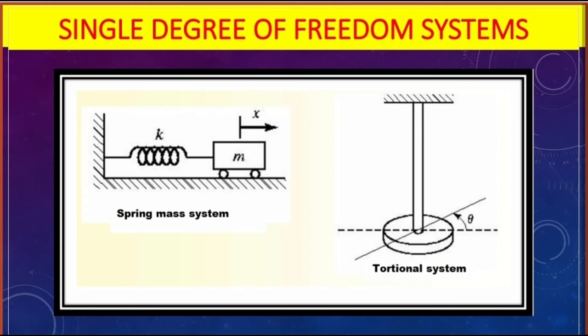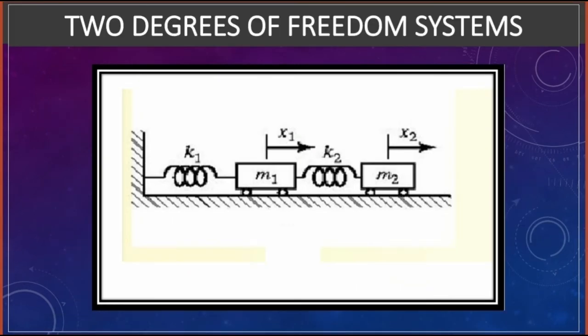A disc attached to a shaft has a single independent relative motion — rotatory motion at an angle theta — therefore it is also a single degree of freedom system. For two degrees of freedom: two masses M1 and M2 attached to each other by two springs, where each mass has one independent translatory motion, form a two degree of freedom system.